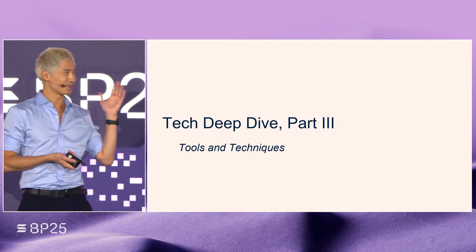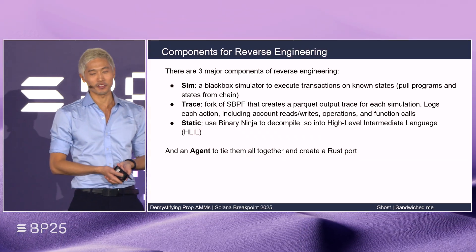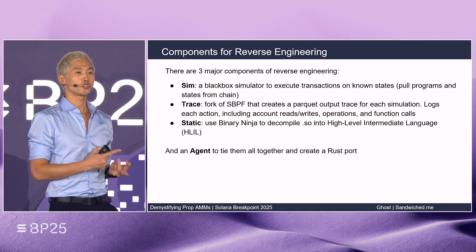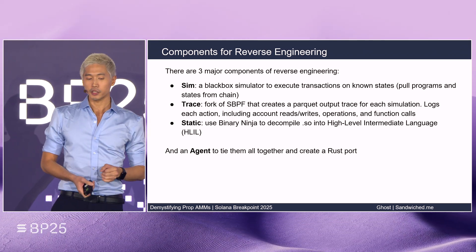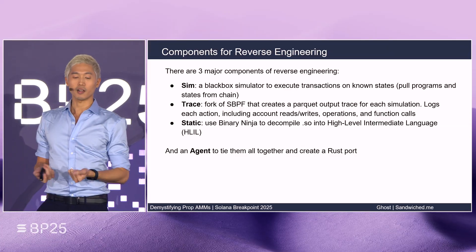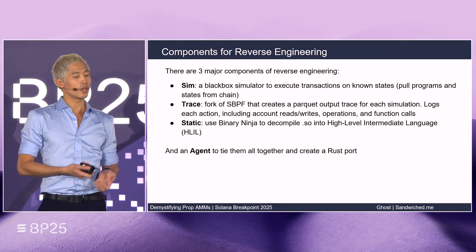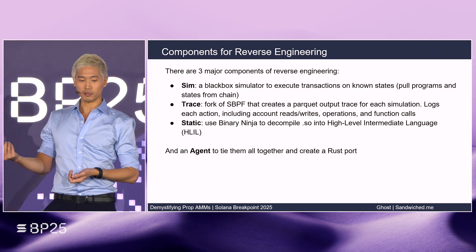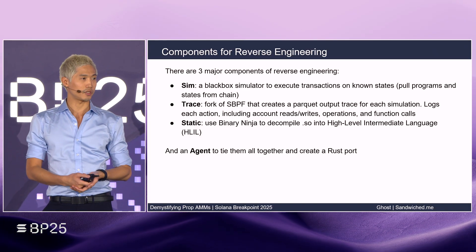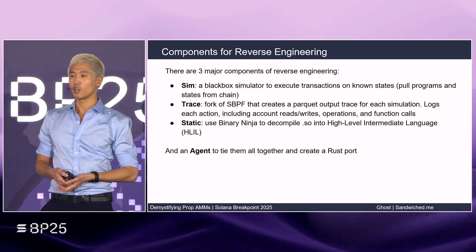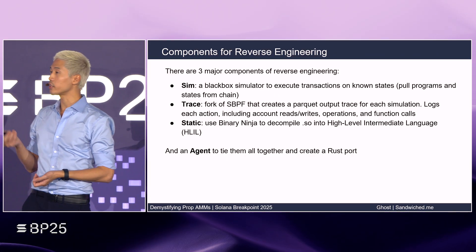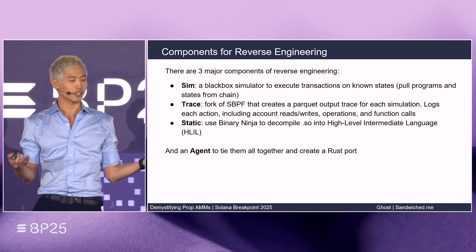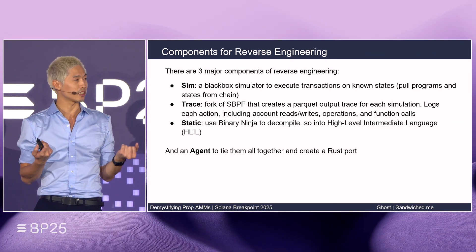Now let's dive into how to reverse engineer one of these Prop AMs. Three pillars we have in mind: simulator, trace, and static analysis. A simulator executes transactions on known state. A trace is a fork of SBPF which instruments the VM and logs a structured trace of what happened. For static analysis, we decompile the on-chain program using Binary Ninja's high-level intermediate language. And then we tie everything together using an AI agent.